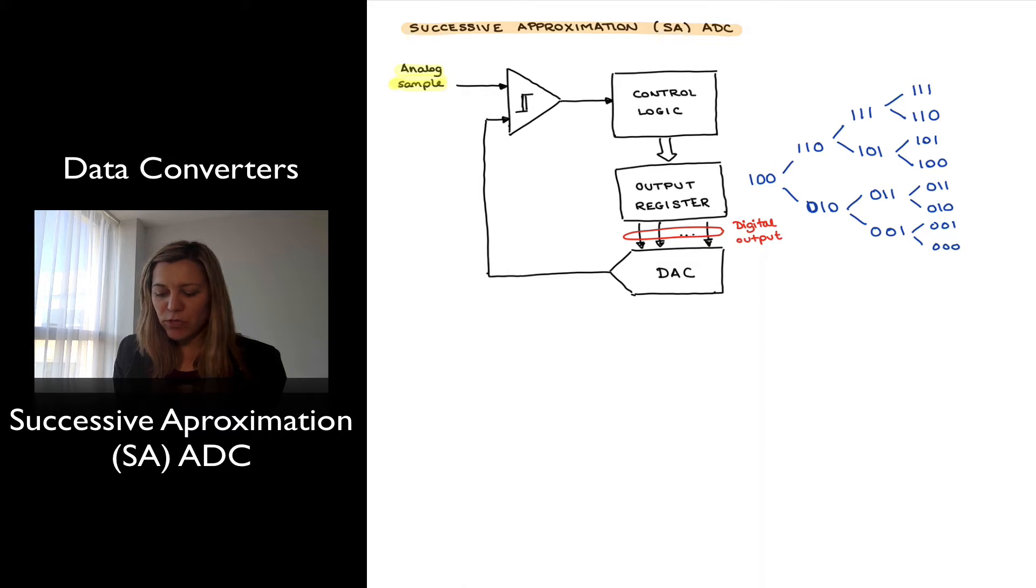It also comprises a comparator, and there is an analog sample applied to the input of that comparator, perhaps from a sample and hold circuit, and then via some control logic, we're going to search for the digital output value that corresponds to that analog sample equivalent.